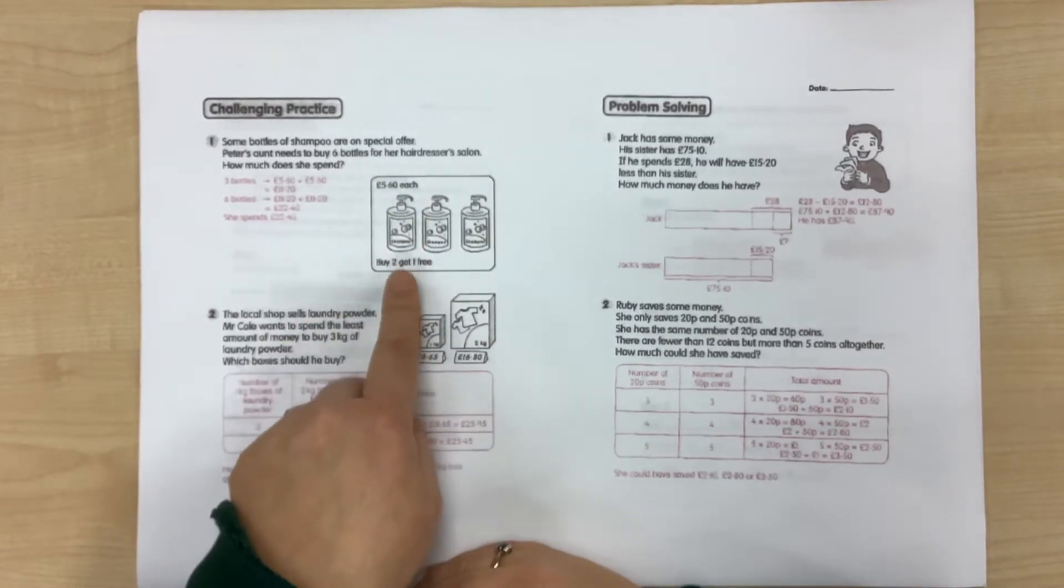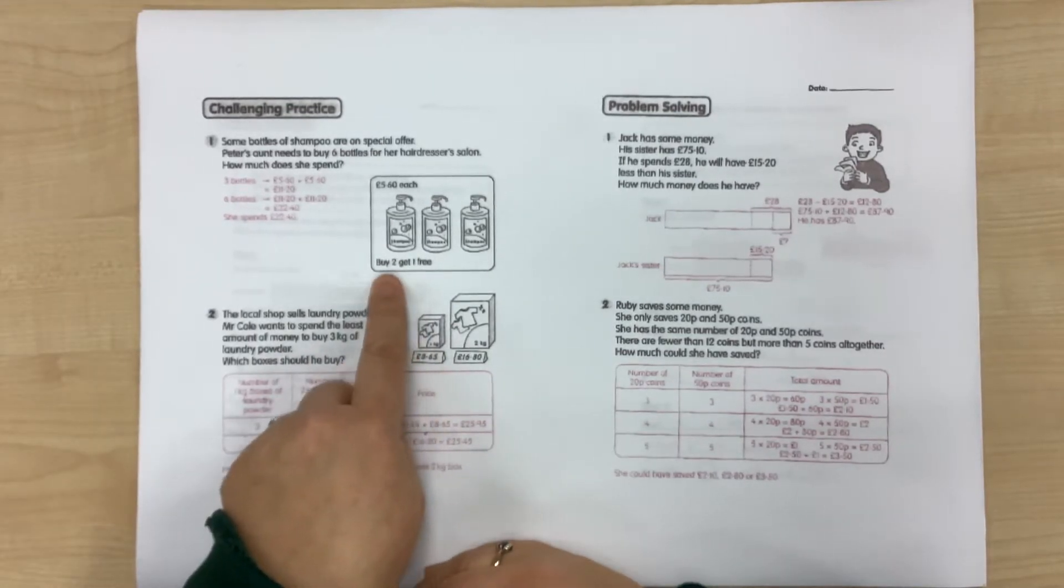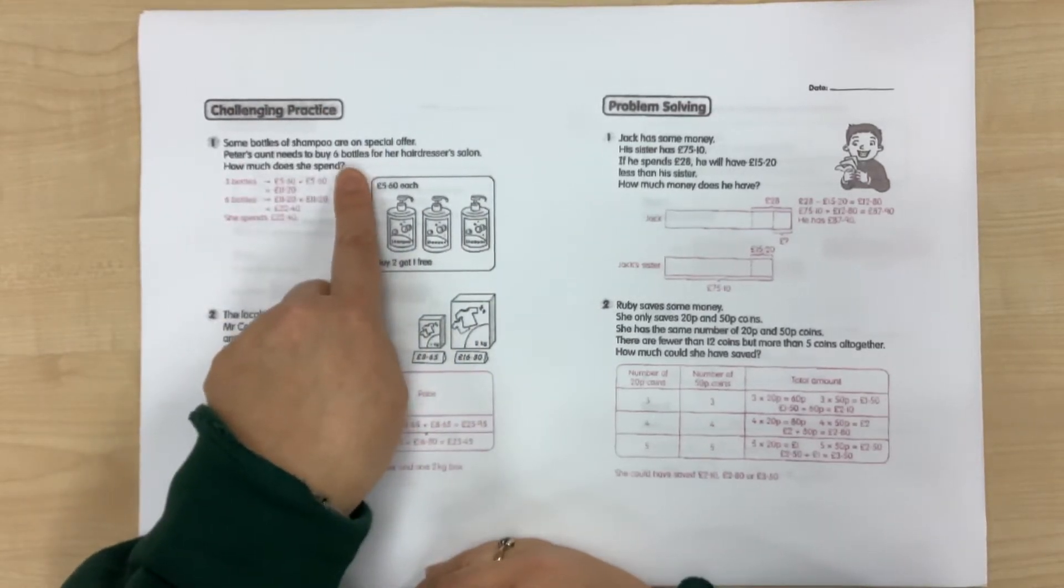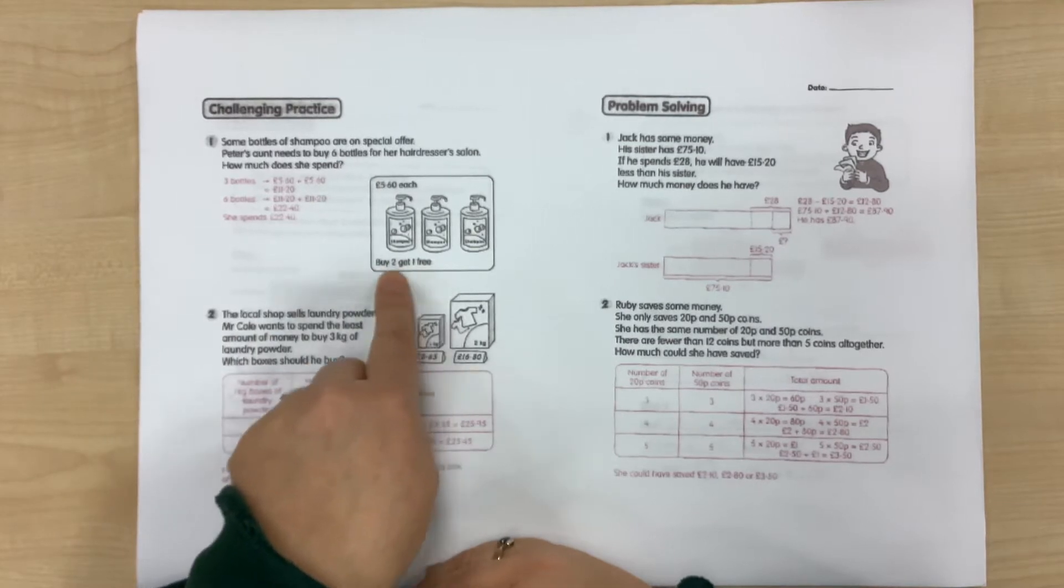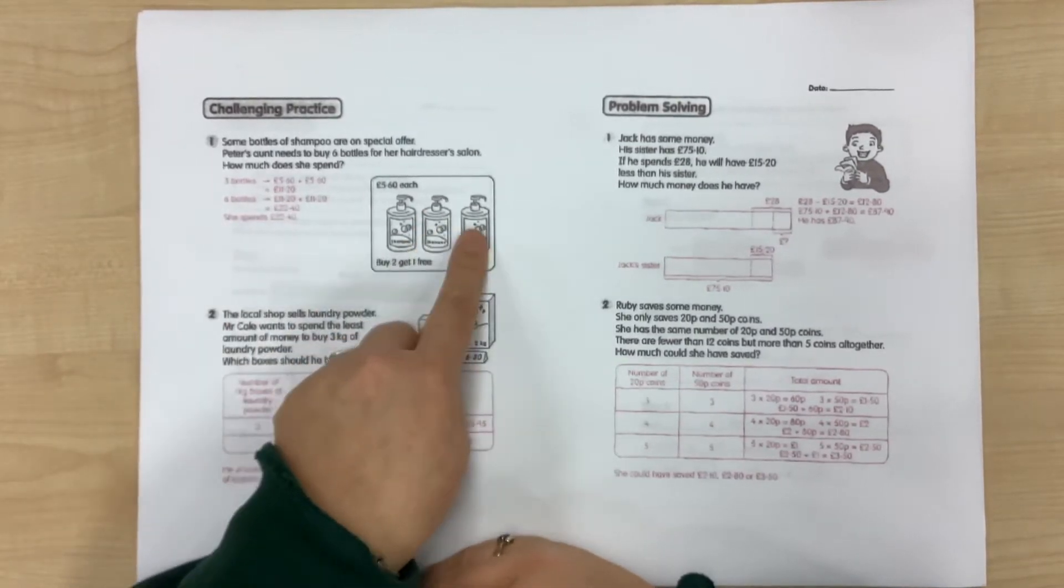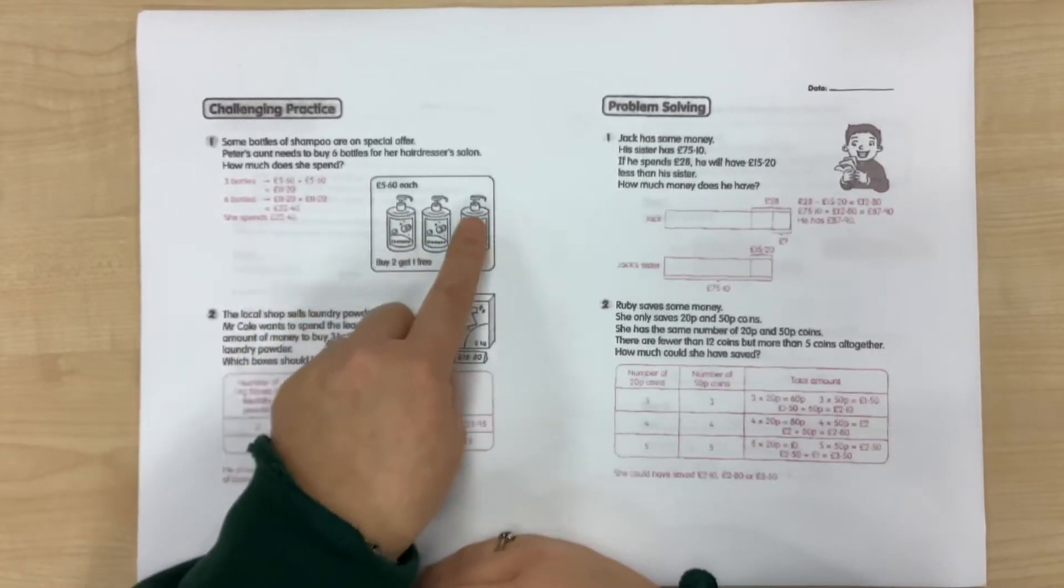But we also have a little additional piece of information down here, and the special offer is that if you buy two, you get one free. So when we're working out the cost of six bottles, this piece of information is vital because if we're buying three, we pay for two but we get one of them free.